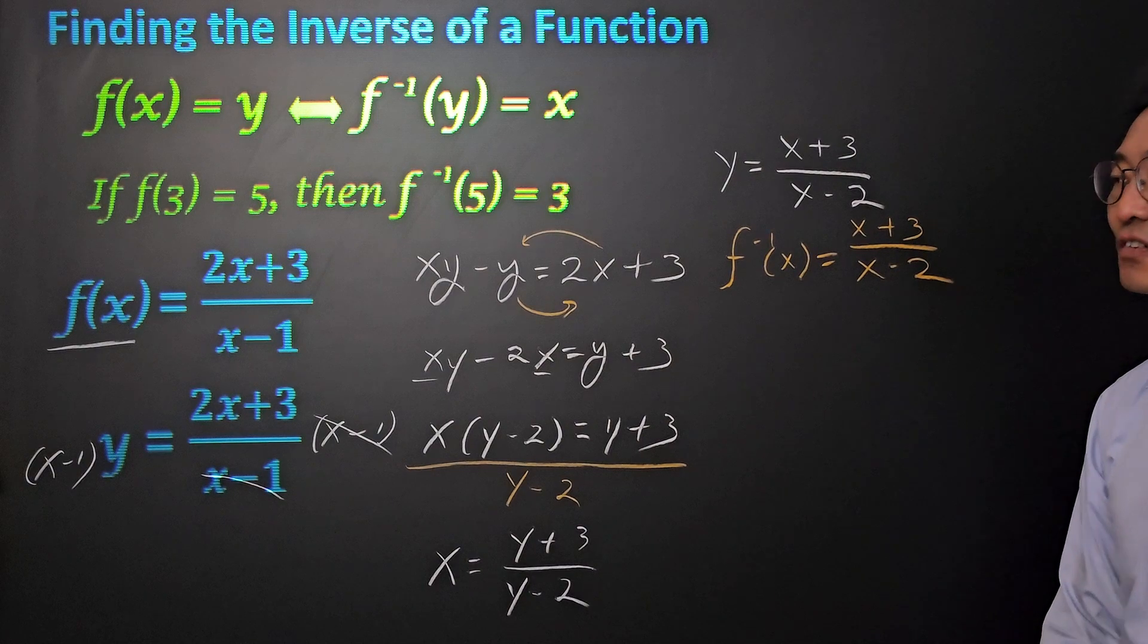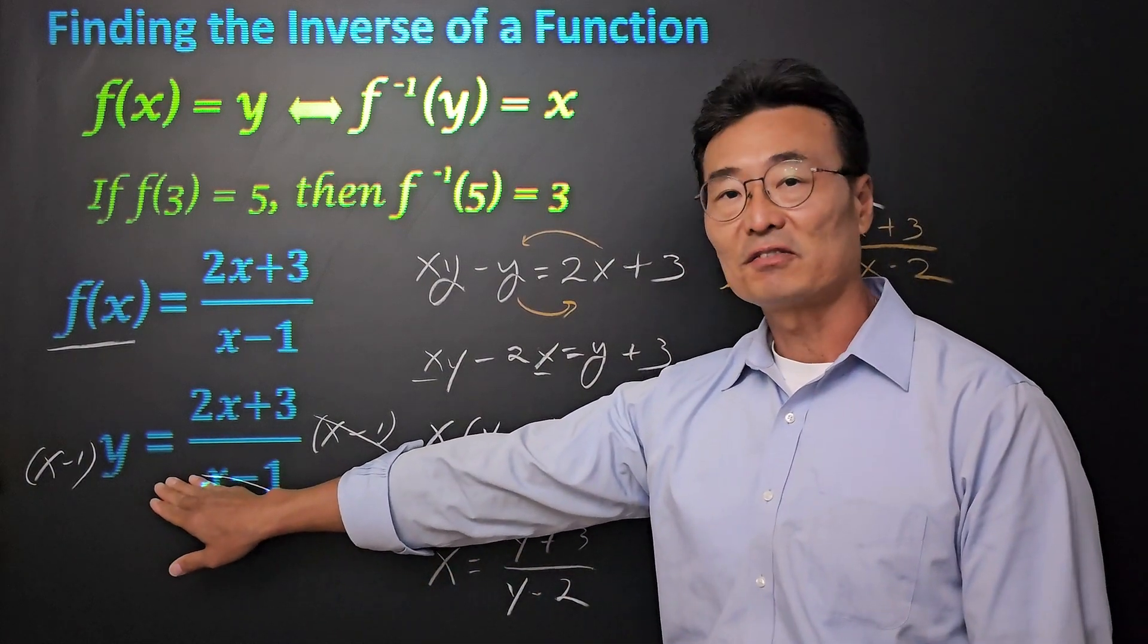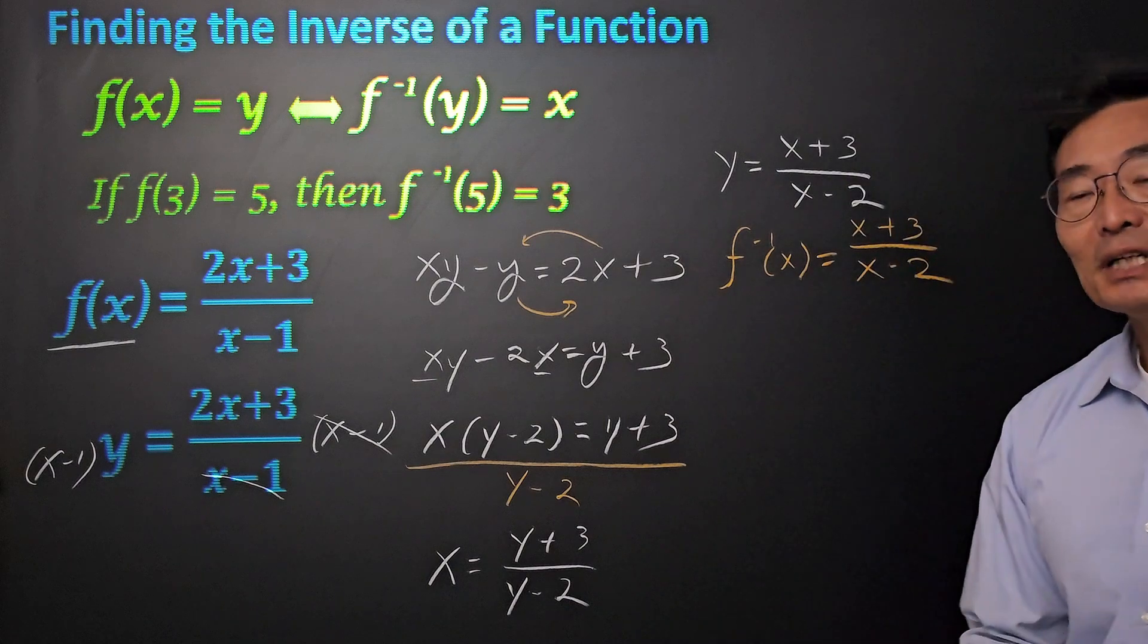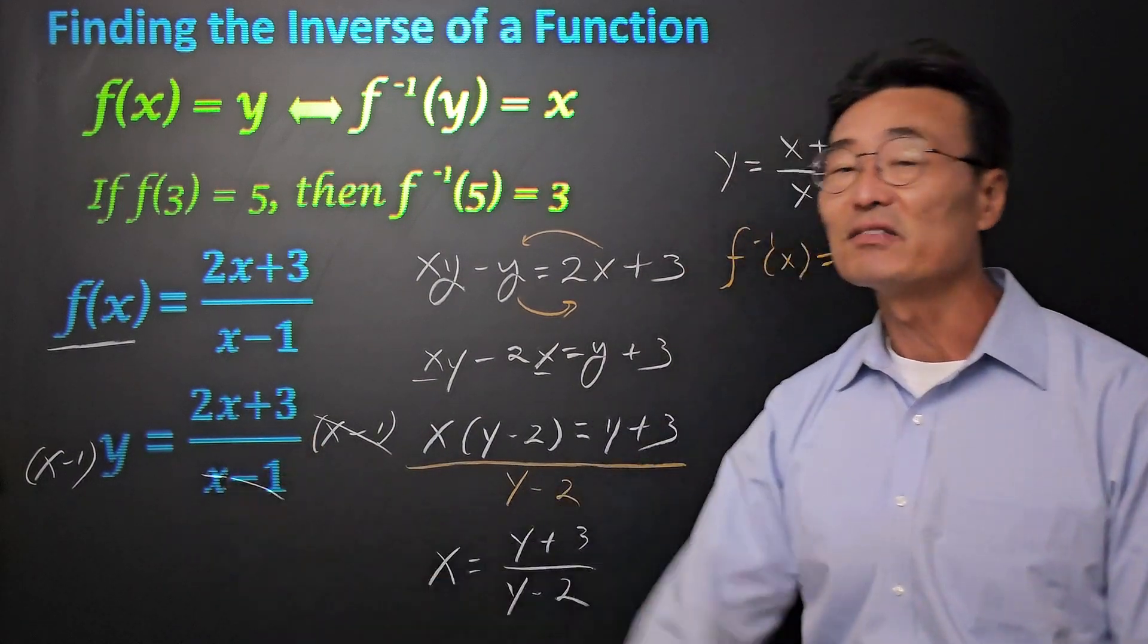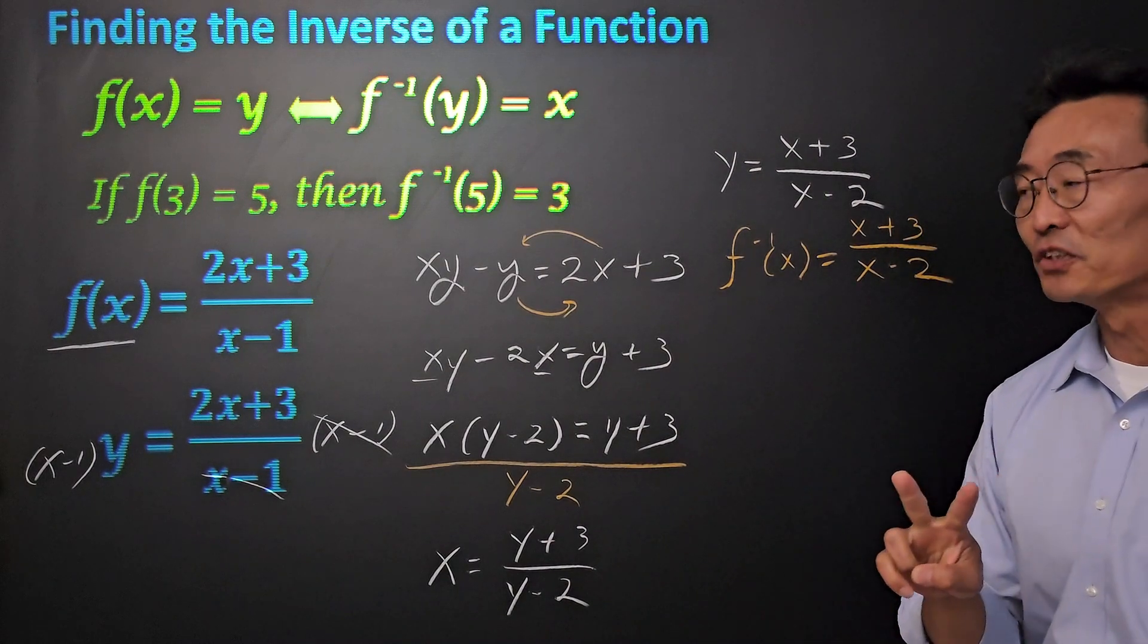One thing you do want to notice is that here, I solved for the x directly. Another way of doing it is to swap out the x and the y to start with and then solve for y. So you've got two ways to go.